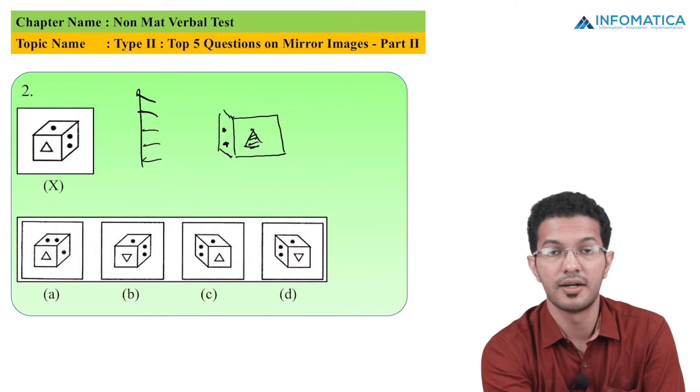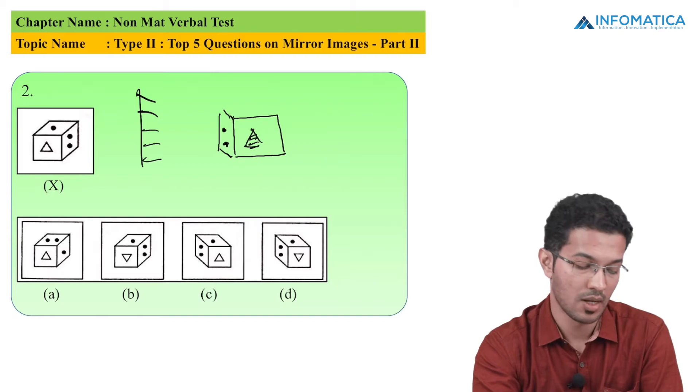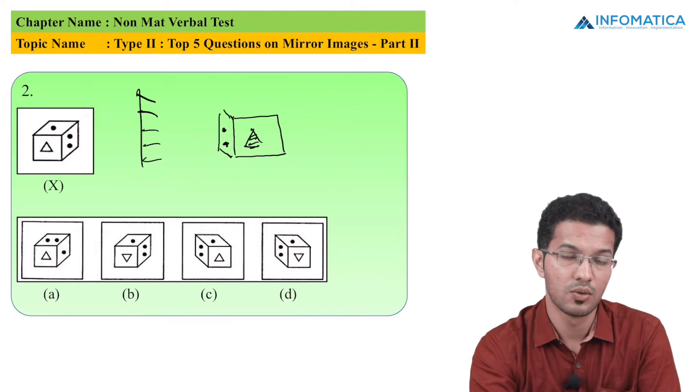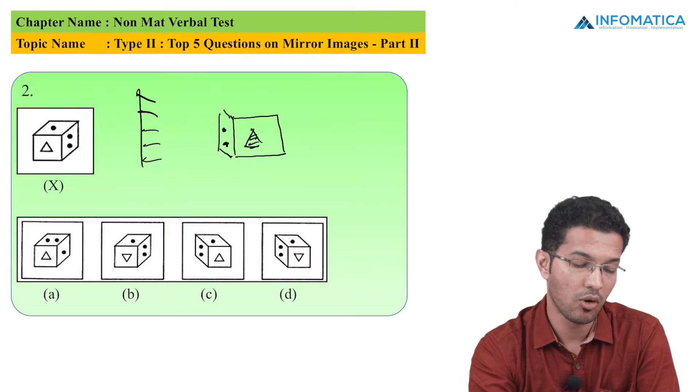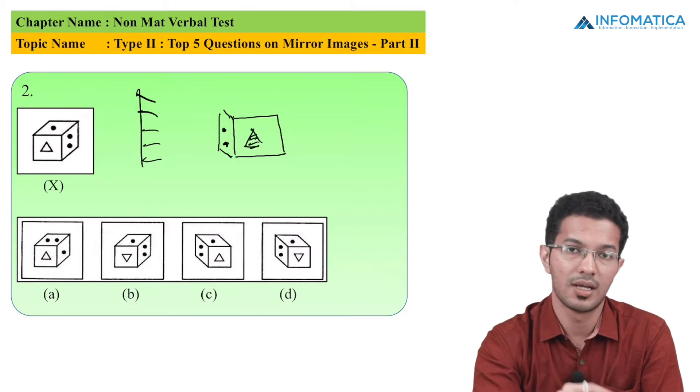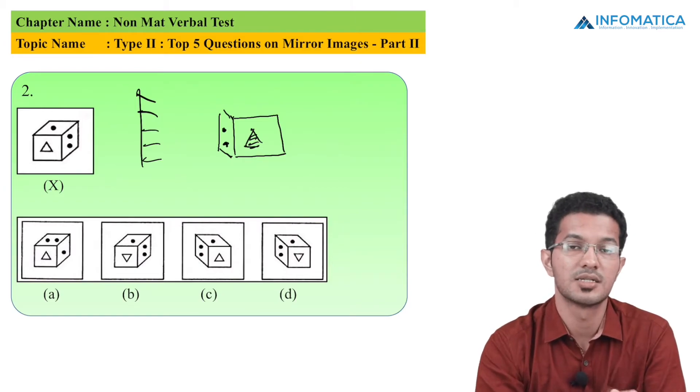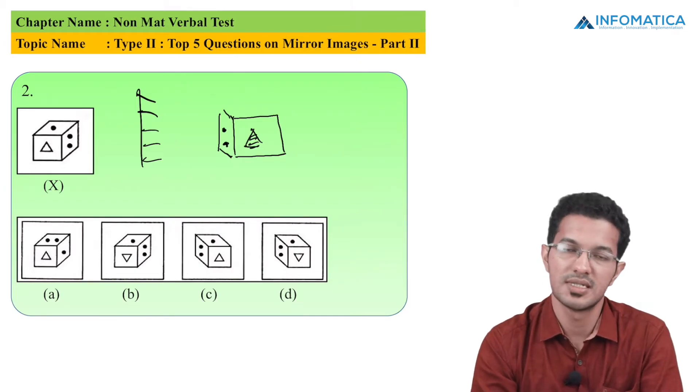The cube is tilted towards the right hand side. But students, if I look at the front face, there is a triangle. It is shown in option C. So I can definitely say from the experience that the answer to this question will be option C.